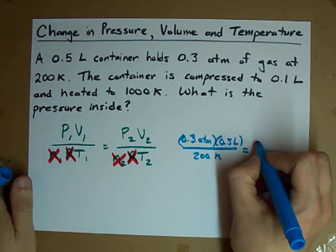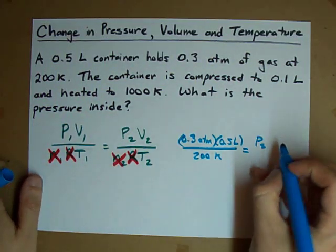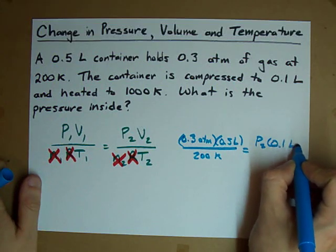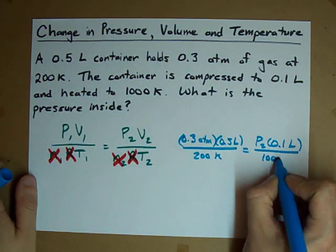New pressure, that's what we don't know. Leave it as P2. New volume, 0.1 liters. New temperature, 1,000 Kelvin.